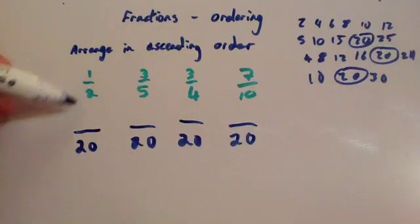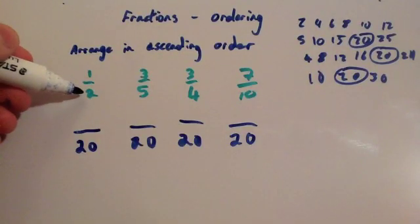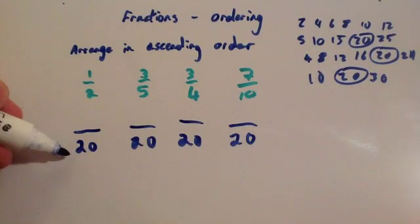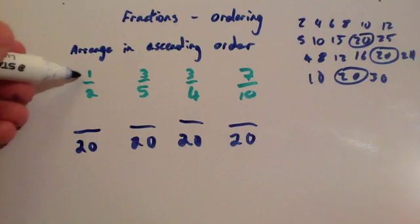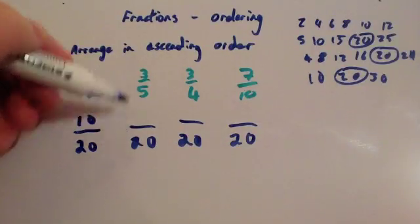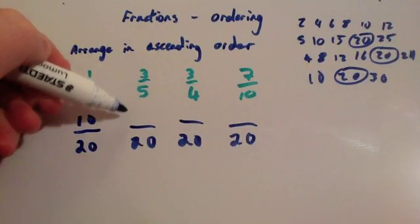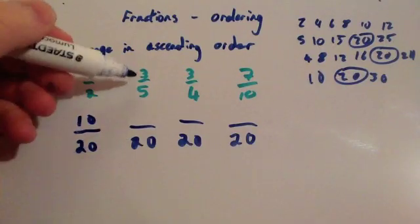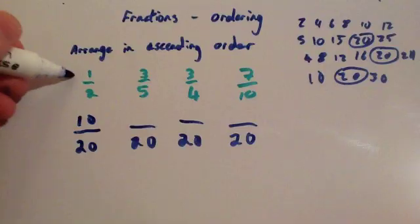The video on equivalent fractions is quite useful for this. To get a half to have 20 in the denominator, you would times the 2 by 10. 2 times 10 is 20. So you need to times the top number by 10 as well. 1 times 10 is 10. To get 3 fifths to have 20 in the denominator, you'd need to times the 5 by 4 to get 20, so you need to times the 3 by 4.